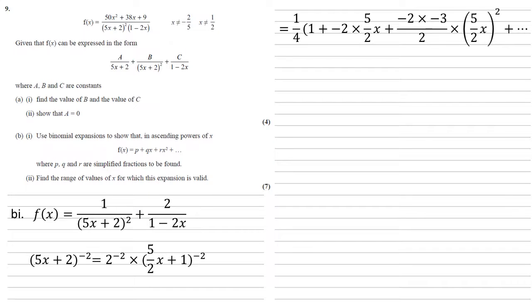So our expansion is the 1, that's already in the bracket, plus power of minus 2 times by the x term, which is 5 over 2x. The third term is going to be the power of minus 2 times by this power minus 1, so minus 3, all over 2 factorial, which is 2, times by the square of our x term, the 5 over 2x.